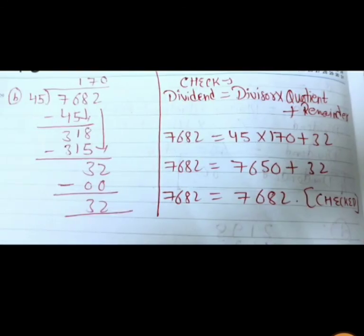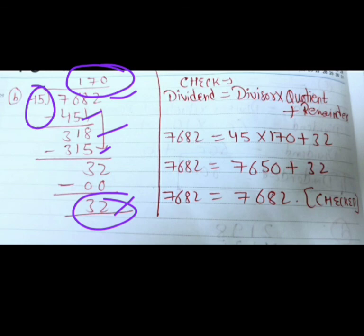Now we have 7682 divided by 45. 45 into 76 is 1, minus 45 is 31. Next digit is 318, 45 7 goes, 315, minus 32. Remainder is 32. To check: dividend is equal to divisor multiply quotient plus remainder. So 7682 is equal to 45 multiply 170 plus 32, so 7682 is equal to 7650 plus 32.